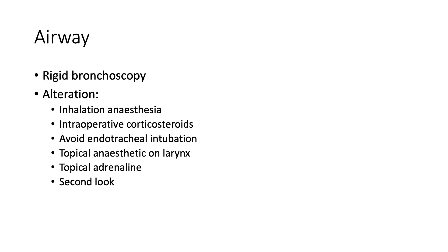The mainstay management for foreign body in the airway is rigid bronchoscopy under controlled conditions of general anaesthetic. Ideally, the patient should be lightly sedated and spontaneously breathing. Intraoperative corticosteroid is given to minimize edema. Endotracheal intubation, if possible, should be avoided as there is a risk of the foreign body being pushed or migrated during the procedure, causing complete airway obstruction. Topical anaesthetic is applied to the larynx to reduce laryngospasm. Topical adrenalin is useful to decongest, reduce swelling and bleeding around the foreign body. It is important to have a second look after successful removal to ensure no remaining fragments or further foreign body in the airway.